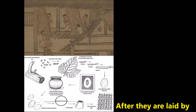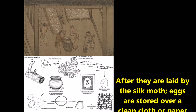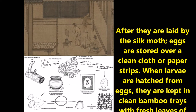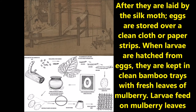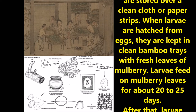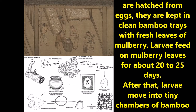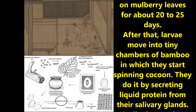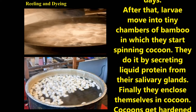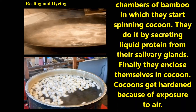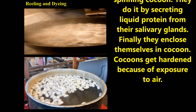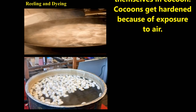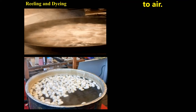Silk moth to silk: After being laid by the silk moth, eggs are stored over clean cloth and paper strips. When the larvae hatch from the eggs, they are kept in clean bamboo trays with fresh mulberry leaves. The larvae feed on mulberry leaves for about 20 to 25 days, after which they move into tiny chambers of bamboo where they begin spinning cocoons by secreting liquid protein from their salivary glands. Finally, they enclose themselves in a cocoon, which hardens upon exposure to air.